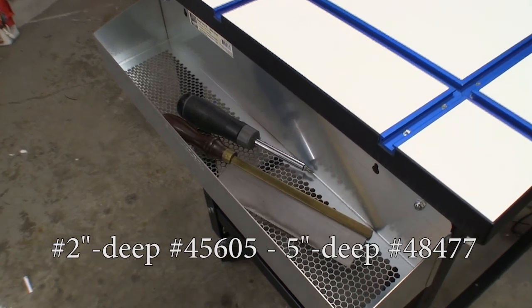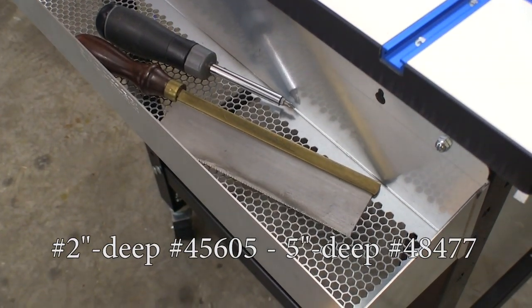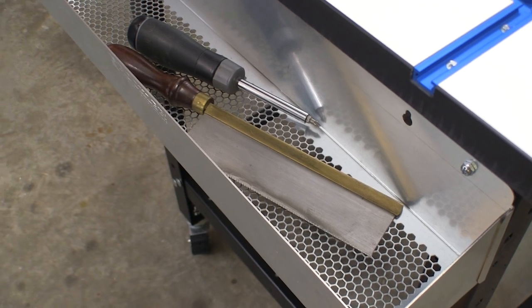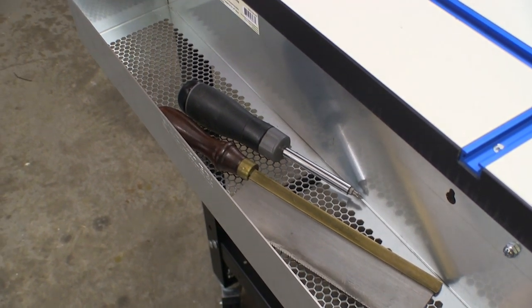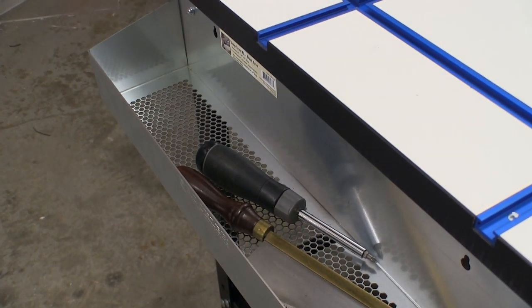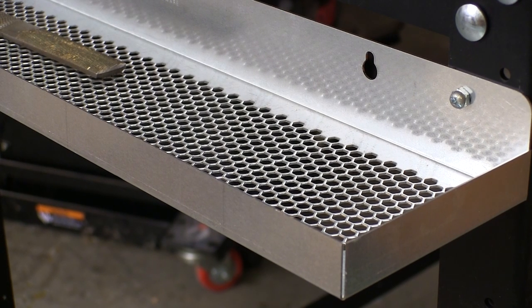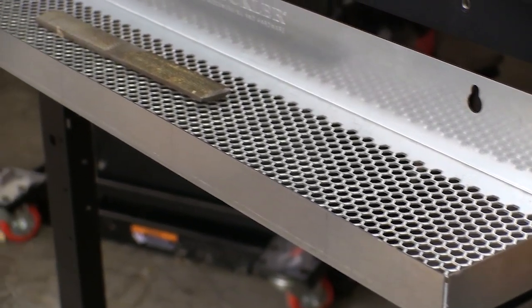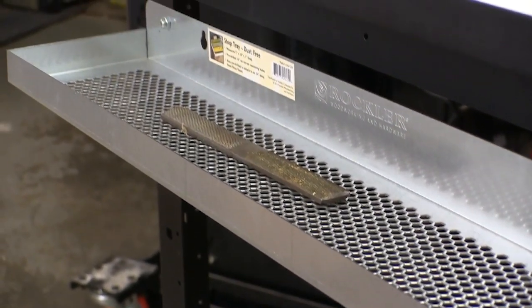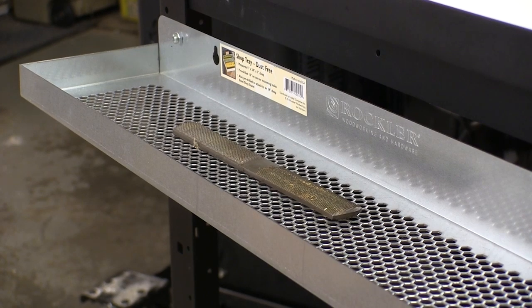Because any working surface gets cluttered with tools too quickly, Rockler offers these dust-free trays. These are all-aluminum trays mounted in pre-existing holes in a Rockler shop stand. And they have the full mesh bottom that lets the dust out and keeps your tools in. Both the deeper and this shallower version of the trays give you lots of room for storing tools and supplies you need for the job.